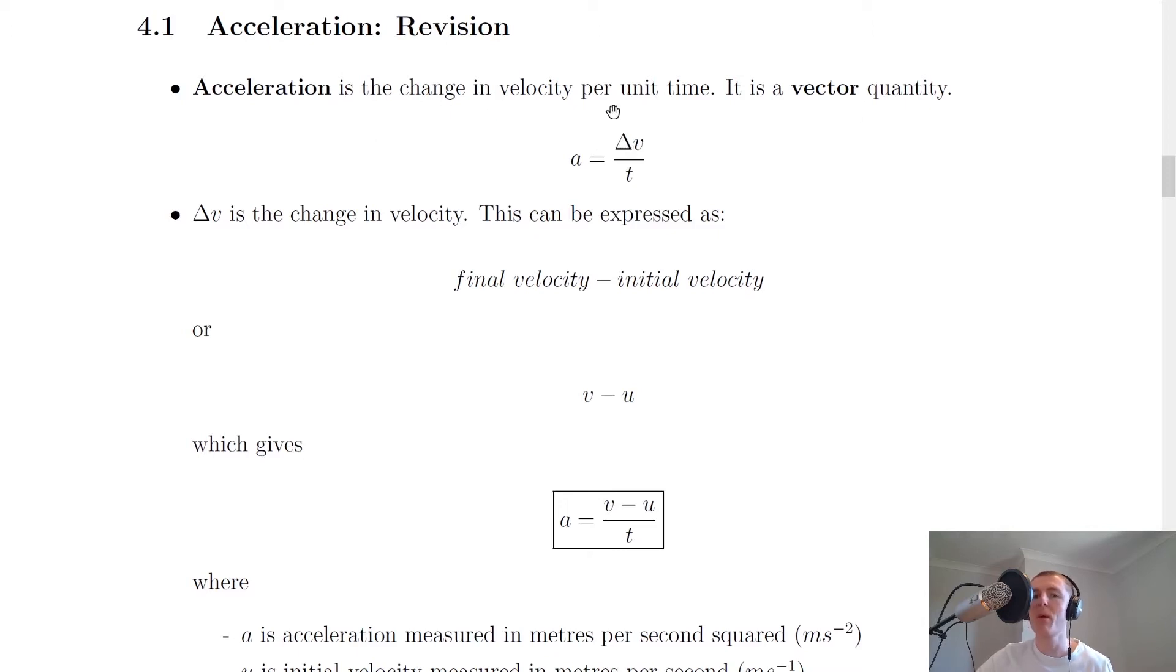So from this definition, we can come up with an equation here, and it says that acceleration is equal to the change in velocity divided by time. So remember this delta symbol, the little triangle, means change in, so that's your change in velocity divided by time.